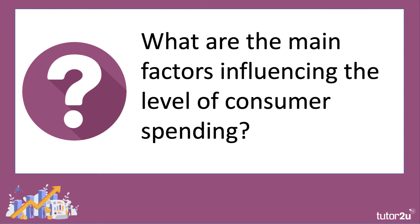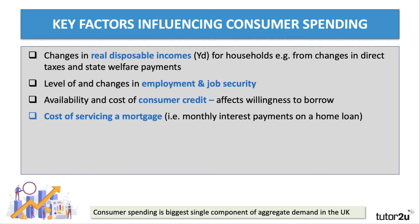Let me take you through some of the factors that are particularly important and worth stressing in an economics exam. We'll start with changes in disposable incomes. Disposable income is income after direct taxes and welfare benefits have been taken into account, and real disposable income is disposable income adjusted for inflation. For most economists, it's the level of real disposable income that has the biggest day-to-day, year-to-year impact on consumer spending.